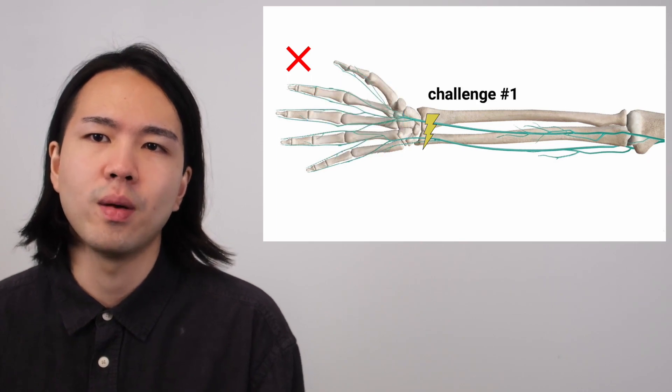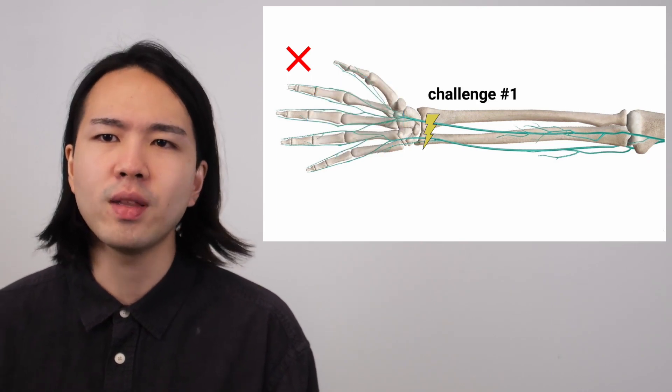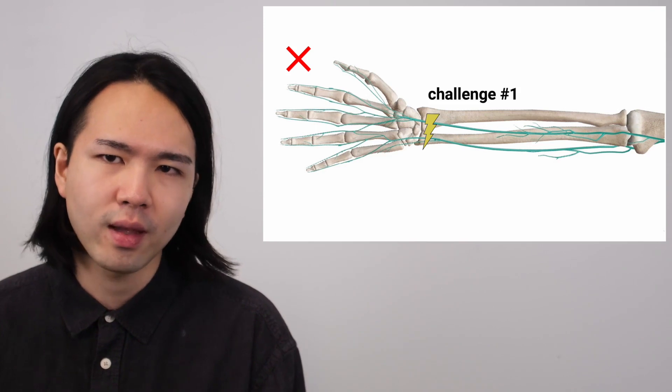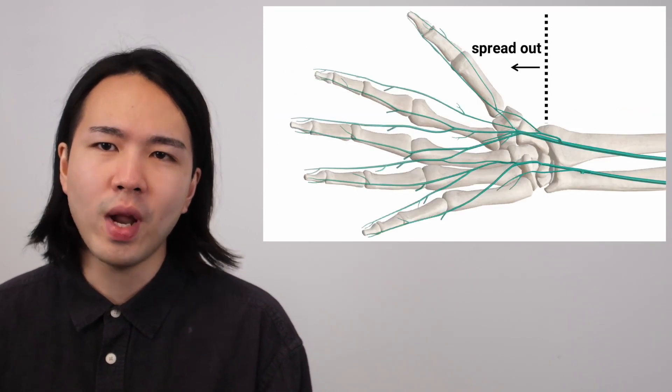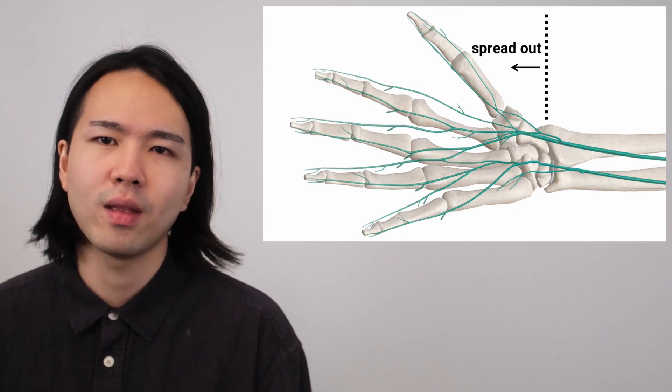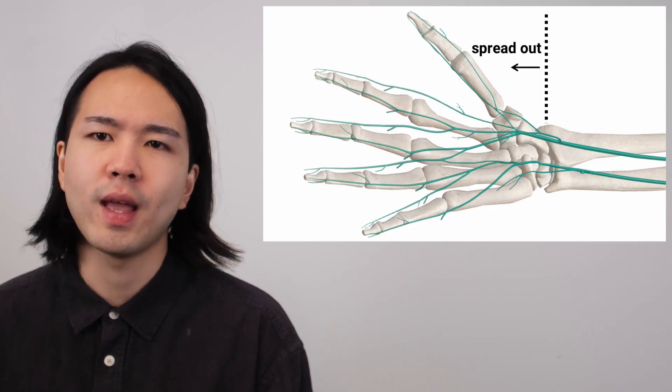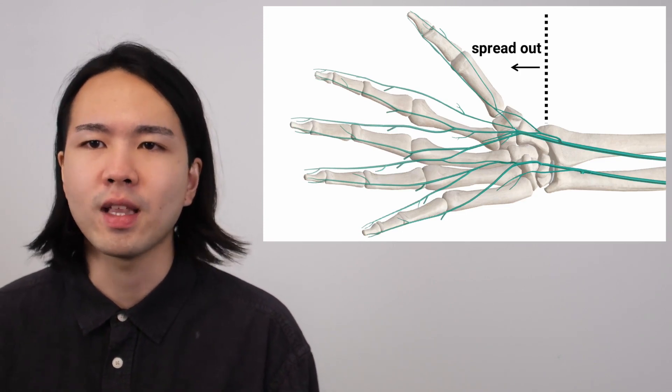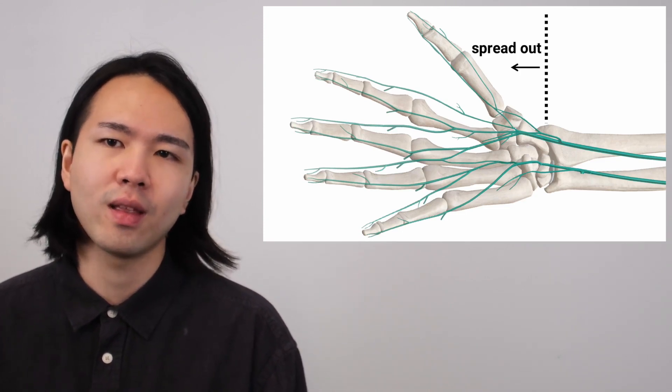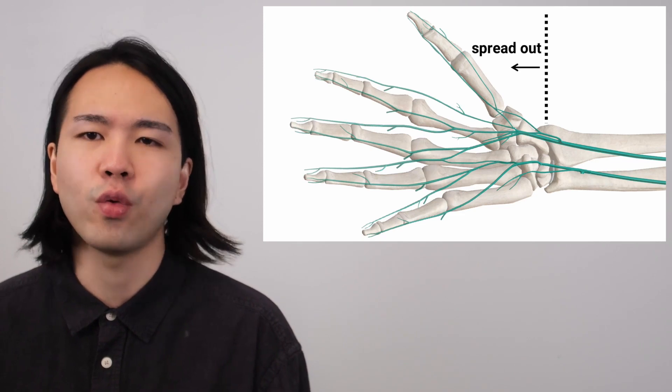This is a challenge. But notice that there is something interesting happening after the wrist. The nerves came as a bundle, but spread out after the wrist. So what if we stimulate after the wrist? This is why we attach electrodes to the back of the hand, so we can stimulate individual fingers.